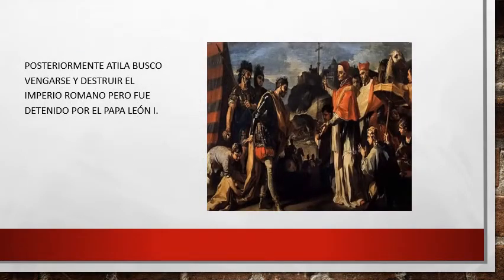Posterior a la derrota en la Batalla de Chalons, Atila buscó vengarse y destruir el Imperio Romano nuevamente, pero su recorrido hacia Roma fue detenido por el Papa León Primero. Hasta el momento queda como misterio qué le dijo el Papa León a Atila para que se detuviera y no atacara Roma. Dos años después, en el año 453 después de Cristo, Atila muere asesinado por una de sus esposas.